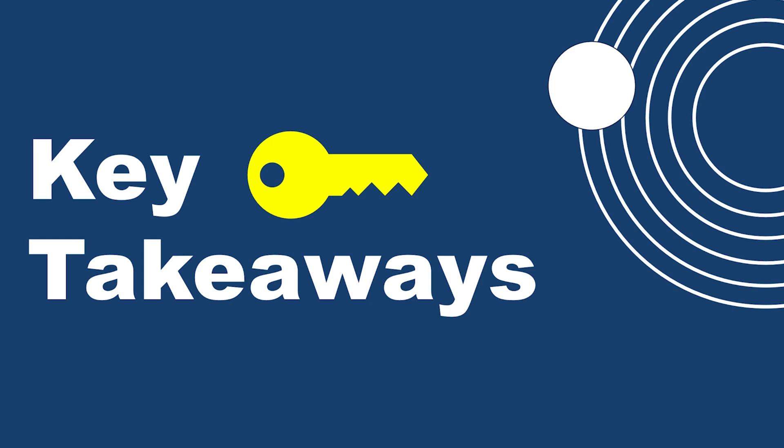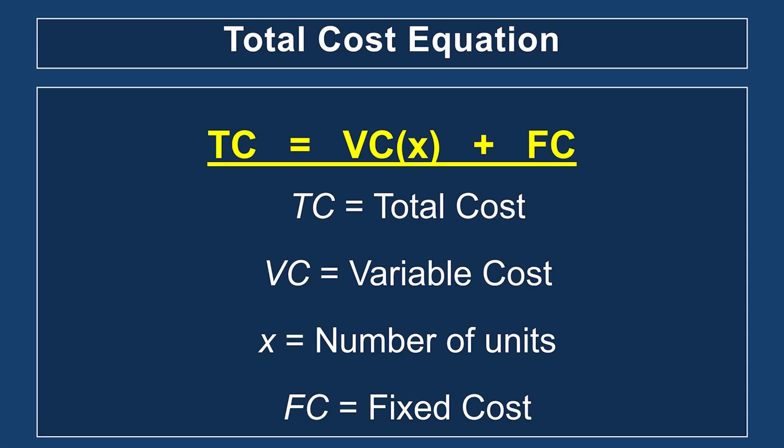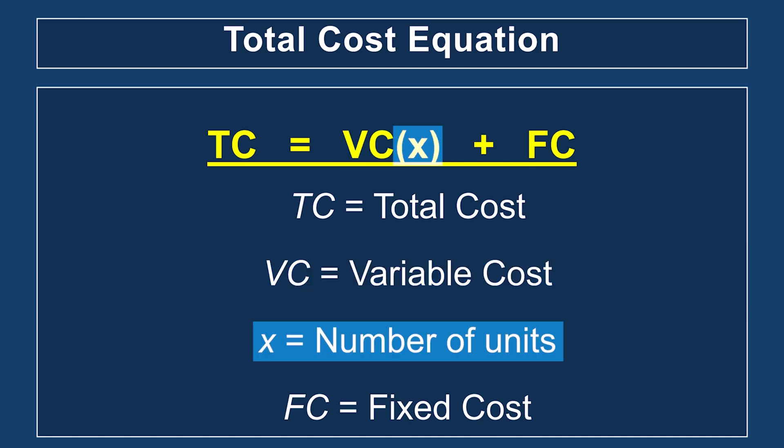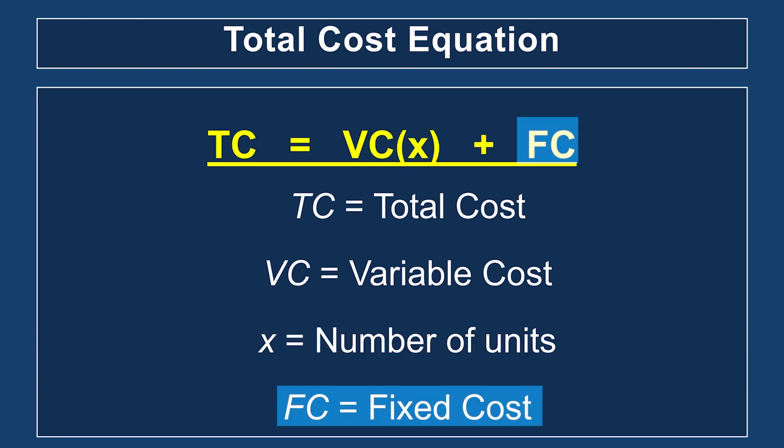Key takeaway: when it comes to the total cost formula, you take your variable cost — any cost associated with producing that product — times the number of units you're producing, plus your fixed cost. That gives you your total cost to produce the product. Compare that to the revenue you'd make selling at a specific price. Once you determine the break-even point, you know what you need to produce in order to make a profit.